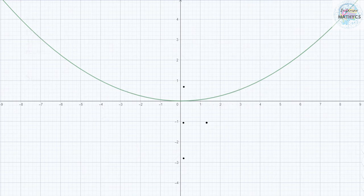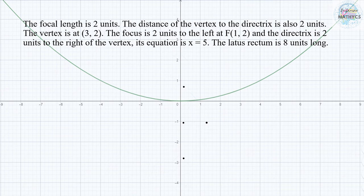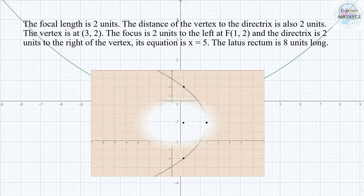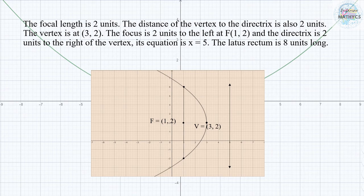The focal length is 2 units and the distance of the vertex to the directrix is also 2 units. The vertex is at (3, 2). The focus is 2 units to the left at F(1, 2), and the directrix is 2 units to the right of the vertex, so its equation is x equals 5. The latus rectum is 8 units long.